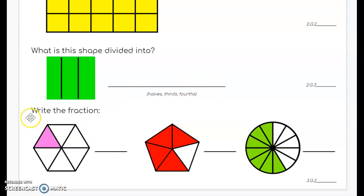And the last section says write the fraction. You have three shapes that are colored. This shape goes to this line, so you're going to write me the fraction that is represented by the color, and write it here.